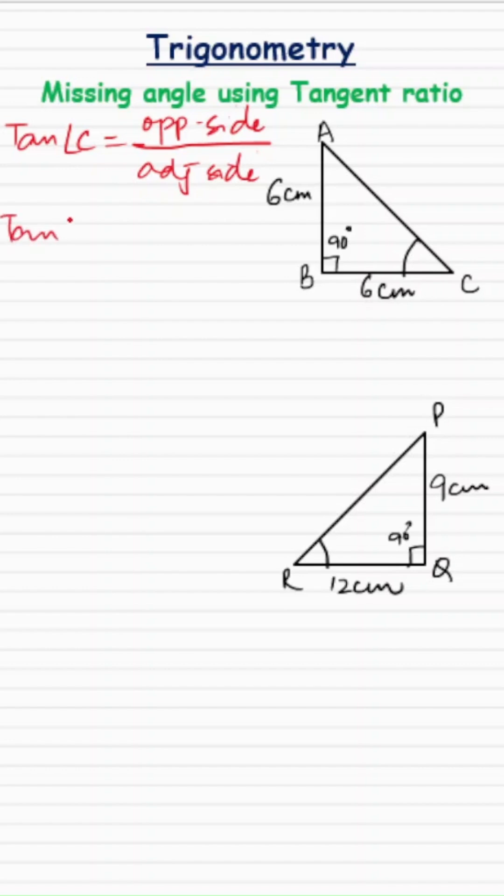Now tan of angle C will be equal to, for angle C, the opposite side AB and the adjacent side BC. Let's fill in values: tan of angle C equals AB, which is 6, over BC, which is 6, and 6 over 6 is 1.